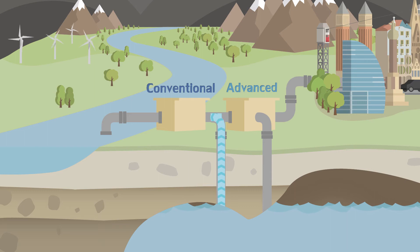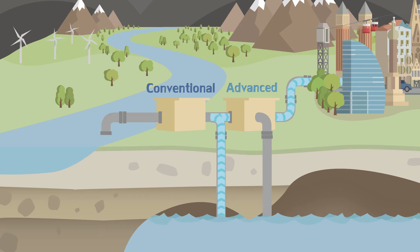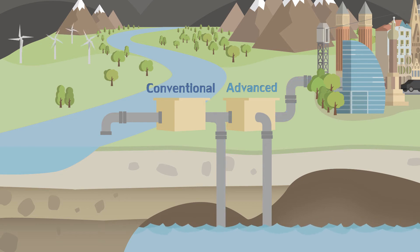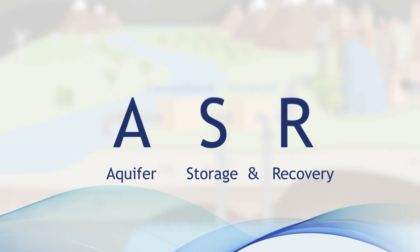In periods of water scarcity or insufficient quality of surface water, half of the injected resources can be recovered, undergoes again an advanced treatment, and then can be supplied to the population. This technique of water injection and recovery is known as aquifer storage and recovery, or ASR.